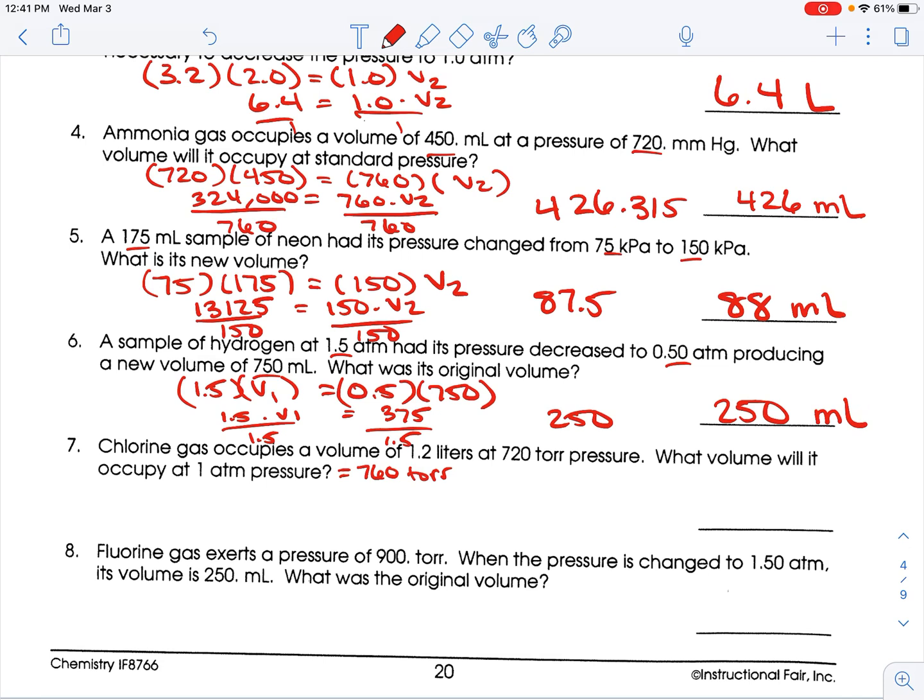So, anyways, we start with 720 and 1.2 equals 760 times V2. 720 times 1.2 is 864 equals 760 times that. Divide both sides by 760, and you get 1.1368. So, two sig figs, two sig figs.